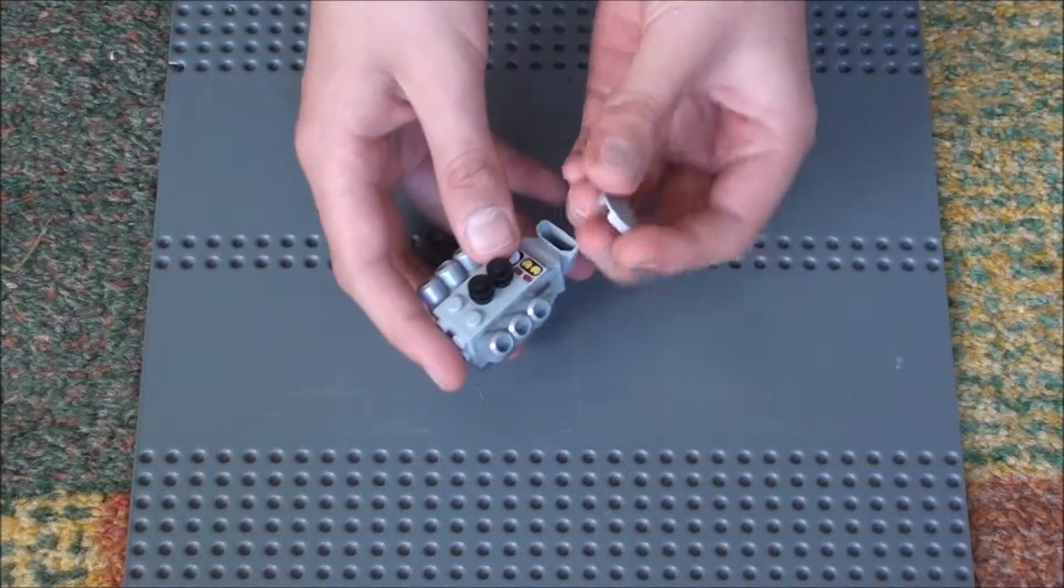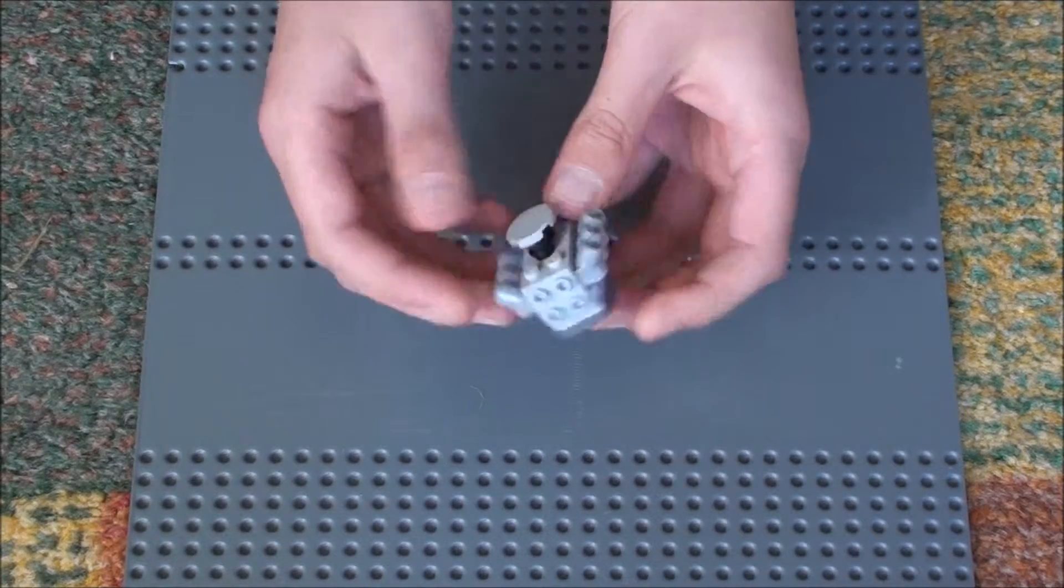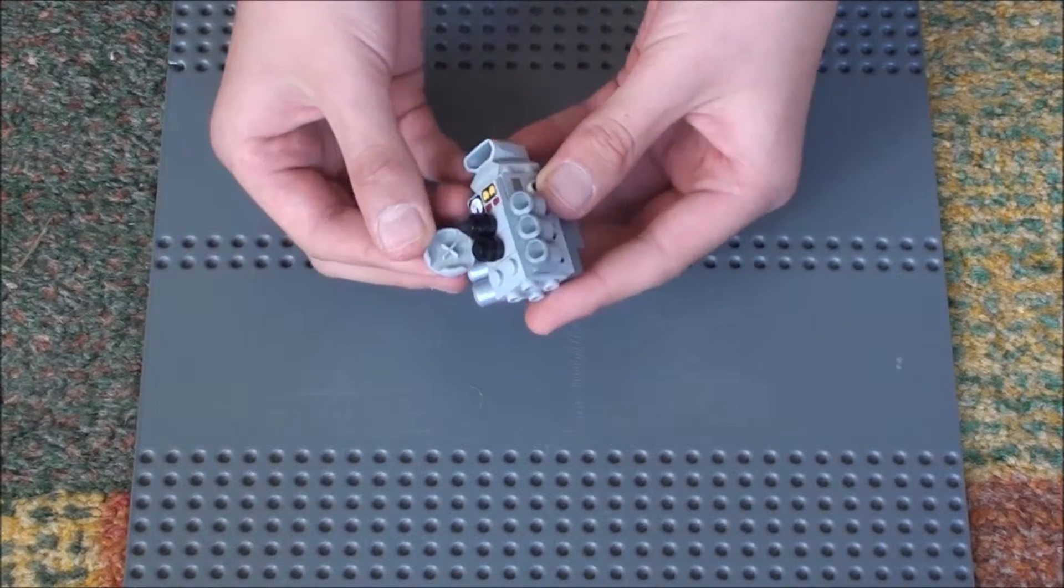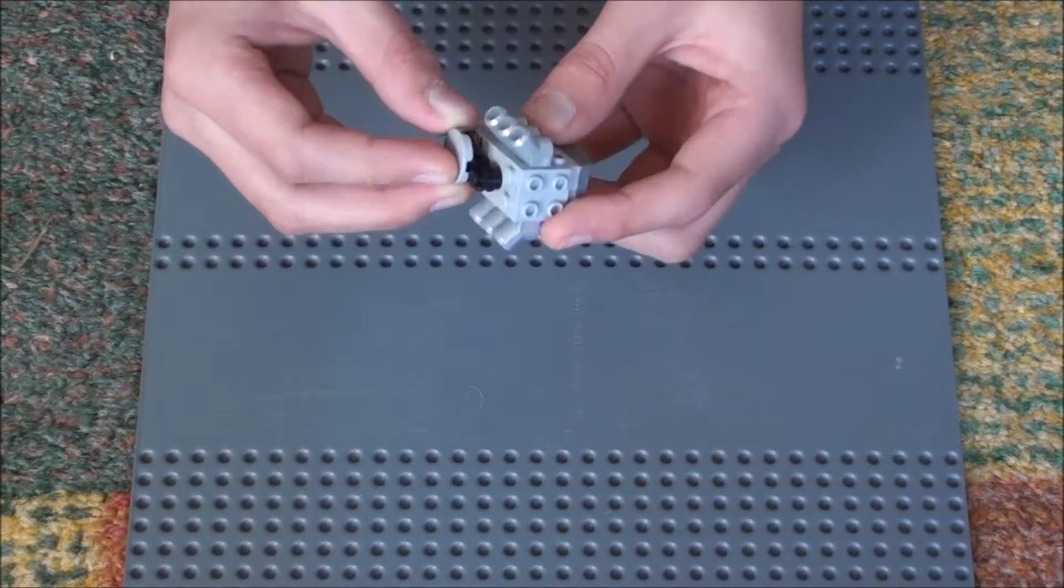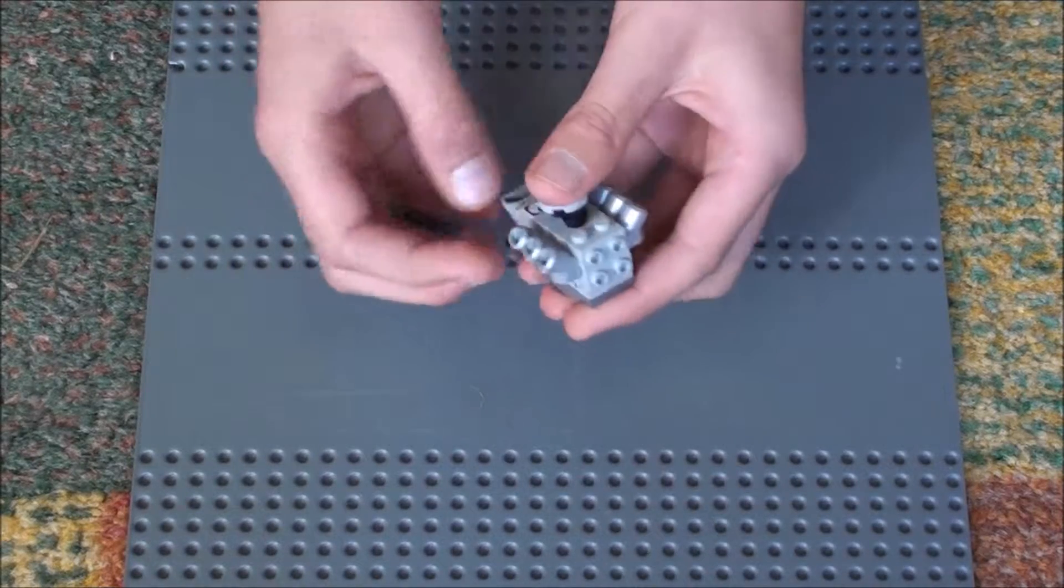Then get the round plate tile and put it on top like that. And that's really the only way that you can put it on. You can't put it on like that or you can't really put it on like that. You have to put it on like that, in that position.